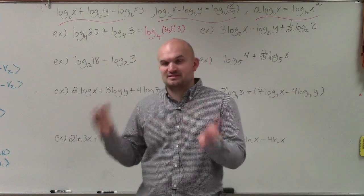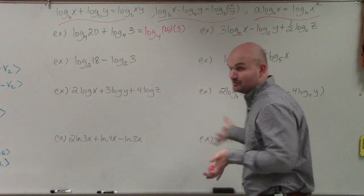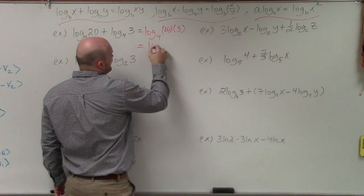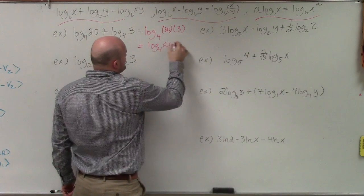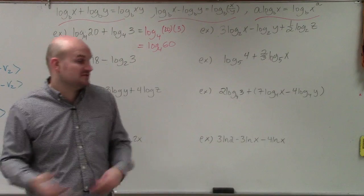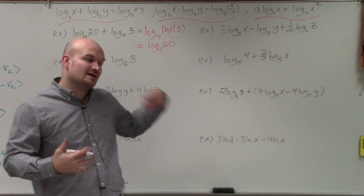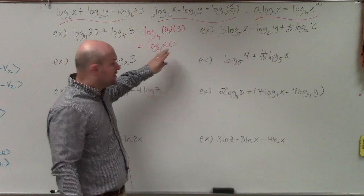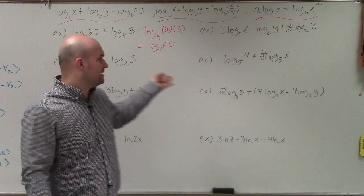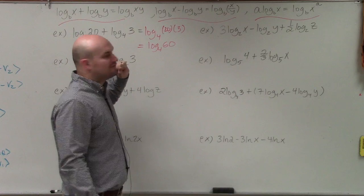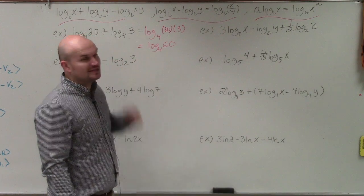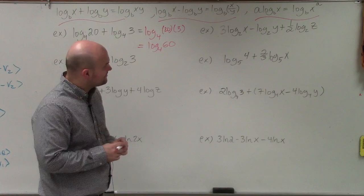That simplifies to log base 4 of 60. We always want to see if we can simplify further. We know that 4 raised to the third power is 64, but I can't simplify this any further to evaluate it, so I'm just going to leave it as log base 4 of 60.